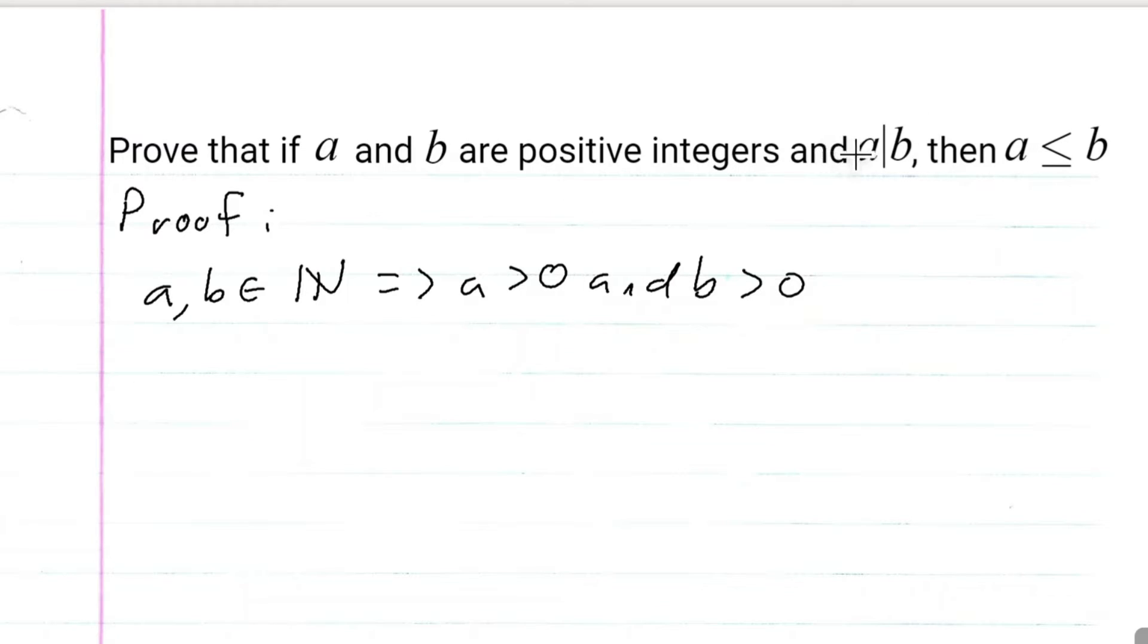We also know that A divides B, so A divides B implies that B is equal to AK, where K is some integer.